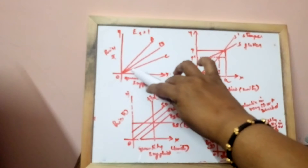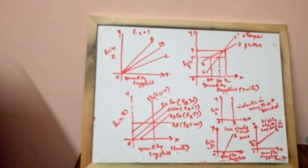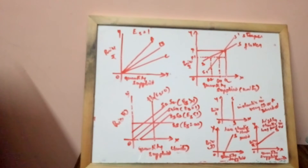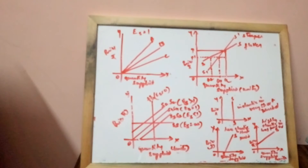It is irrespective of the angle they make at the origin. Here you find A, B, and C are the supply curves of three different commodities. The price elasticity of supply for all three curves is equal to 1, although A is steeper and C is flatter, but elasticity will be equal to 1. Any straight line supply curve which passes through the origin has unitary elastic supply, irrespective of the angle it makes with the origin.